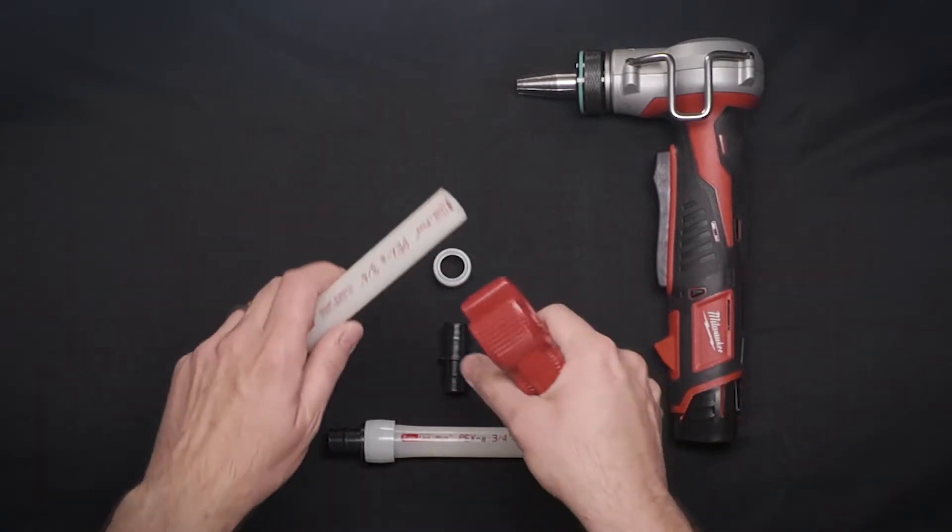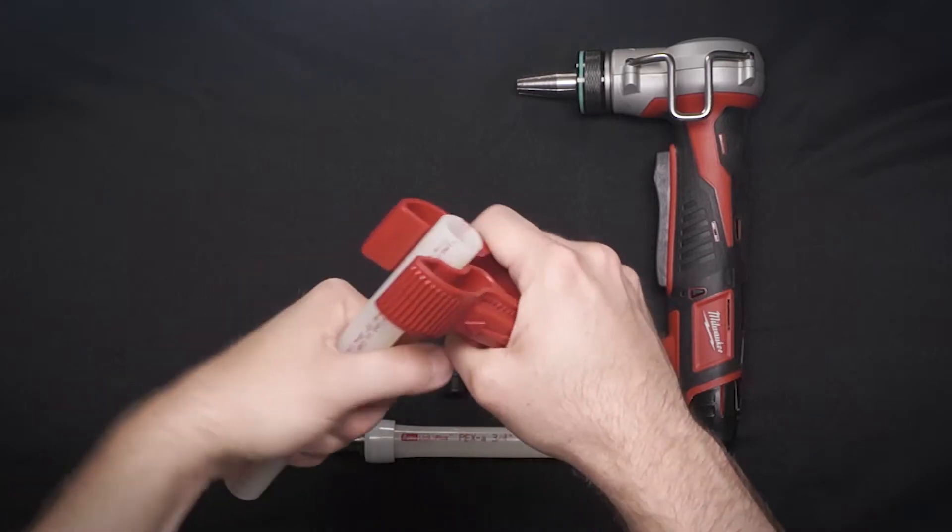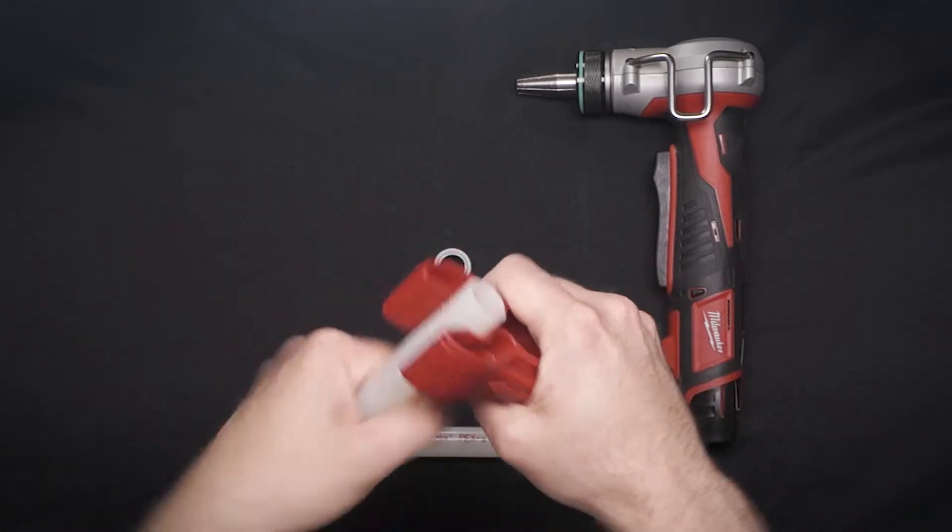The first step will be to cut the PEX squarely. The radial tubing cutter provides a square cut without any squeezing of the tubing.